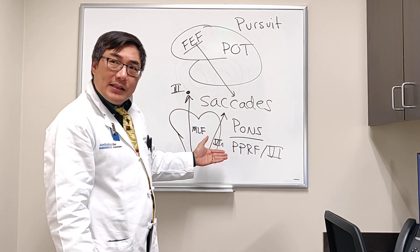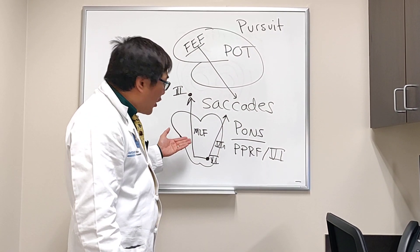But in the pons, the parapontine reticular formation and the sixth nerve are for the horizontal gaze.